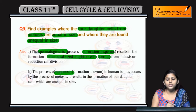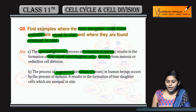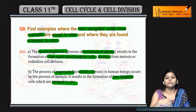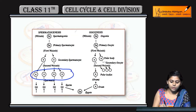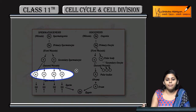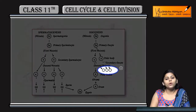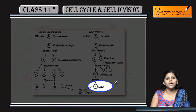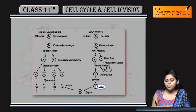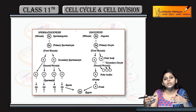In the case of oogenesis — the formation of ovum — the daughter cells are not equal in size. In spermatogenesis, the second meiosis produces cells equal in size, whereas in oogenesis the cells are unequal in size compared to the ovum. So, the four daughter cells are equal in size in the case of spermatogenesis, and unequal in the case of oogenesis.